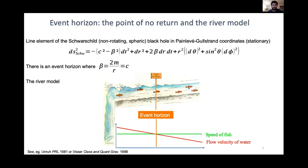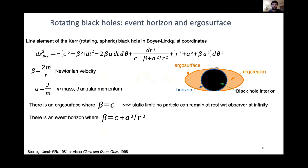As Jeff demonstrated in his experiments, if you replace the water with a superfluid and the fish with sound, you get exactly the same picture — then called a dumb hole or sonic hole. This was explicitly shown in work by Unruh in 1981. So from this we understand the event horizon as the point of no return — but that's for a non-rotating black hole.